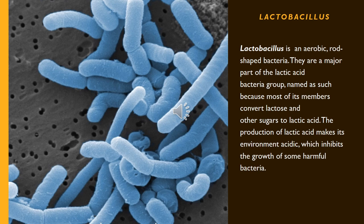Lactobacillus is an aerobic, rod-shaped bacterium. They are a major part of the lactic acid bacteria group. Most of its members convert lactose and other sugars to lactic acid. The production of lactic acid makes its environment acidic, which inhibits the growth of some harmful bacteria.